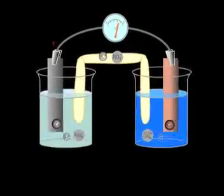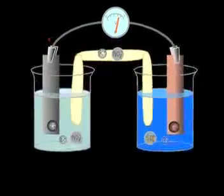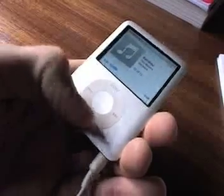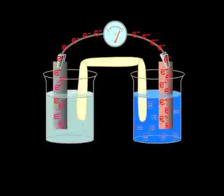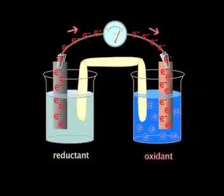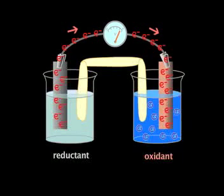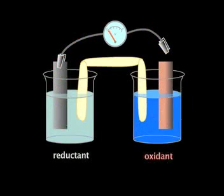They're kept in separate compartments, and it's only when you press play that electrons flow, dragged through the external circuit from the reductant to the oxidant. Break the circuit, and the flow stops.